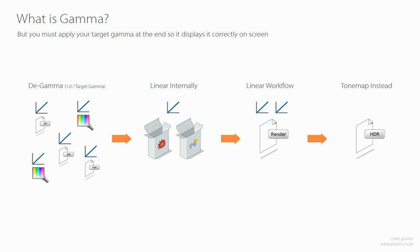Another workflow you can do is to de-gamma your inputs — images, colour picking, whatever — and keep it linear internally. Export the final render in linear space, and then instead of applying gamma and saving as a JPEG, keep it linear and save it as an HDR image. Then go into a tone mapping application like Photomatix, Artisan, or even Photoshop, and that gives you much more control — you can bring out the darks in specific areas or tone down the hot spots, much more than just applying 2.2 gamma to everything.